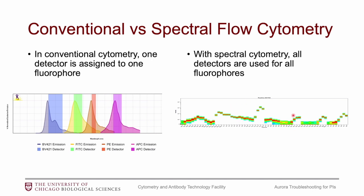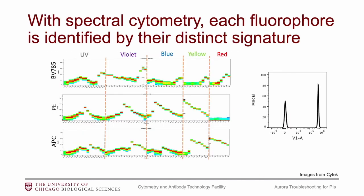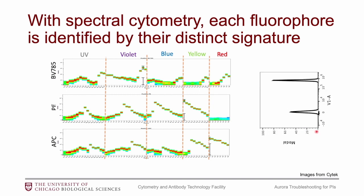Let's talk a little bit more about these signature plots. To read them, you need to know that these plots are essentially a summary of 64 individual histograms. Looking at a single histogram, we have compensation beads stained with a single fluorophore — a positive population, a negative population, and intensity on the x-axis. If we flip this so intensity is on the y-axis and gate on the positive population, this is what these spectral plots are showing: intensity on the y-axis, each column is one detector, and the heat map shows what the histogram is showing.